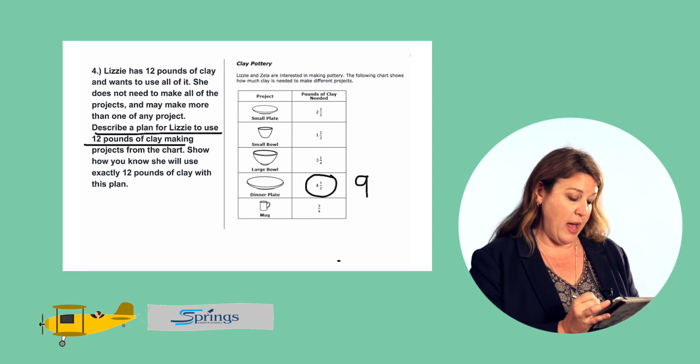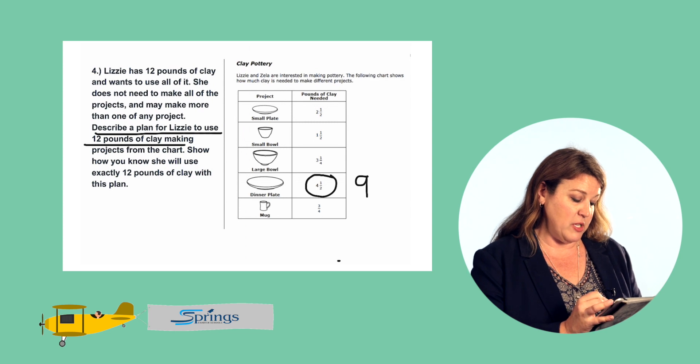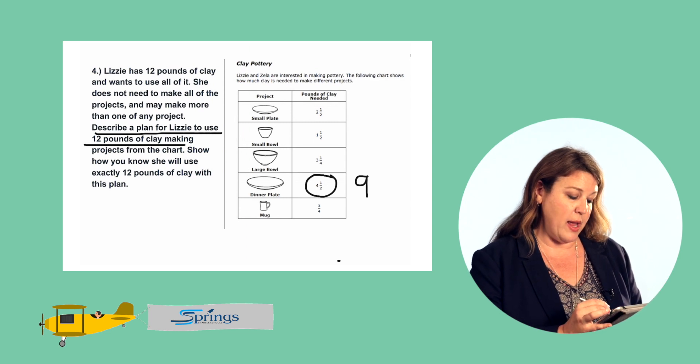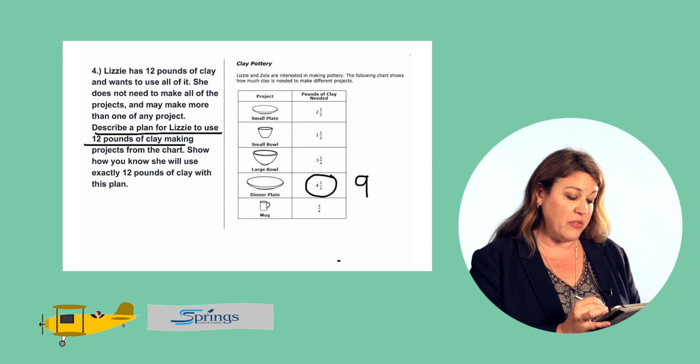But the small bowl is one and a half. So let's see, what if she made two small bowls? One and a half plus one and a half is equal to three.